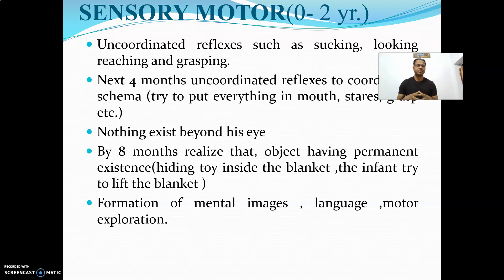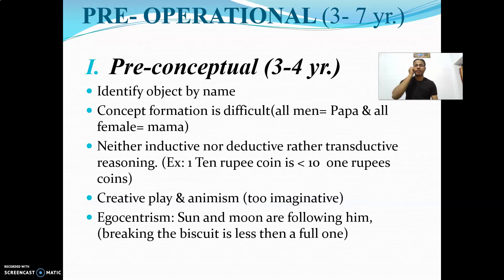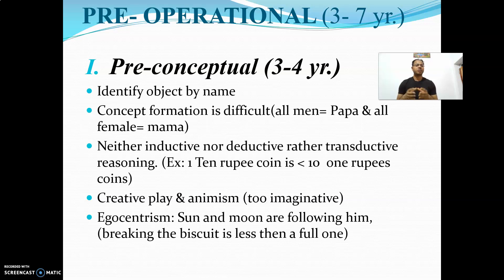Then the child starts formal mental imaging, language, motor work, and exploration. In the pre-operational stage's pre-conceptual phase, concept formation is very difficult. At this stage, the child calls all men 'papa' and all females 'mama.' This reasoning is called transductive reasoning — neither inductive nor deductive. Two important things that happen in this stage are creative play and animism.